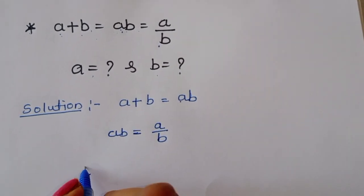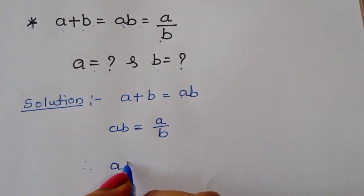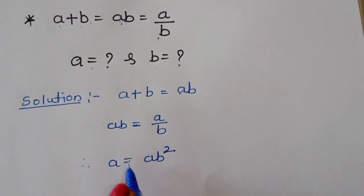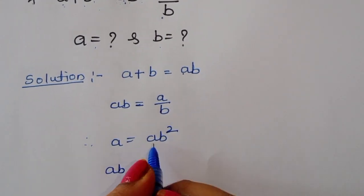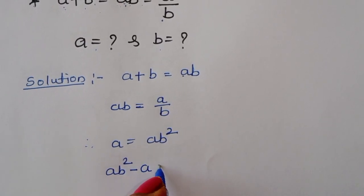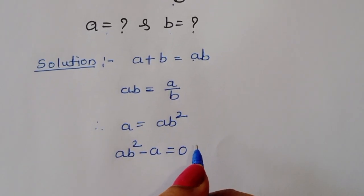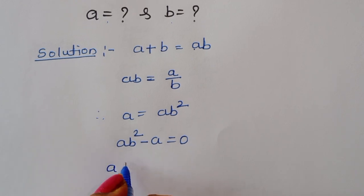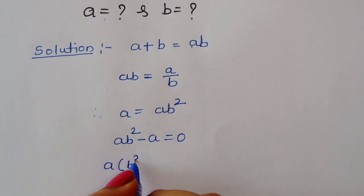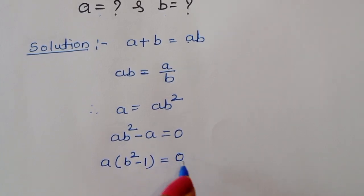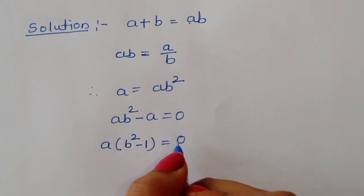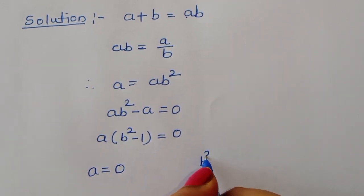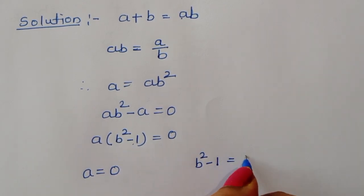From ab = a/b, we can write a = ab². So ab² - a = 0. Taking a as common, we get a(b² - 1) = 0. This gives us two equations: a = 0, and b² - 1 = 0.